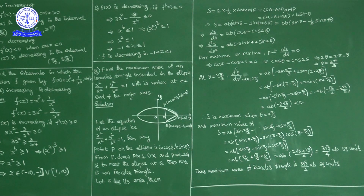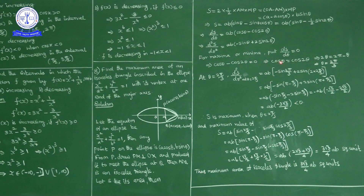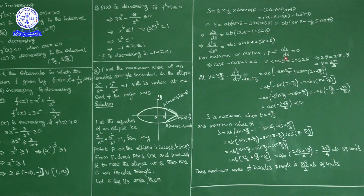For minimum or maximum, set dS/dθ = 0: ab(cosθ − cos2θ) = 0, so cosθ = cos2θ. This gives 2θ = 2π − θ, so 3θ = 2π, therefore θ = 2π/3 is the critical point.